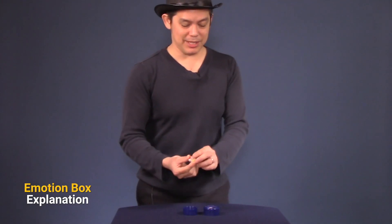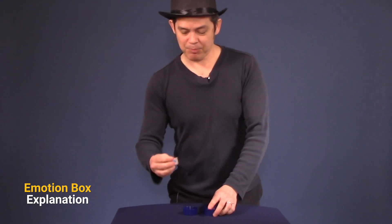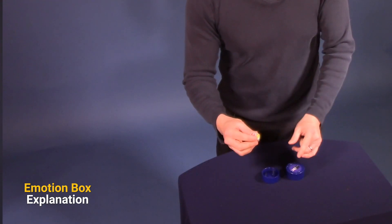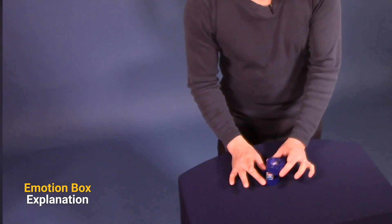The explanation. Now this trick uses the emotion cube and it has three different faces on it. You can ask your guest to pick an emotion and put it face up in the box and cover the box.